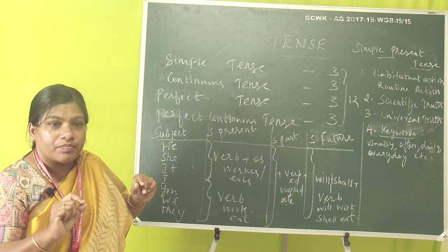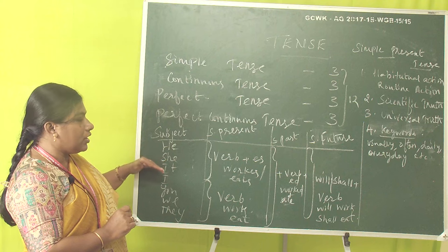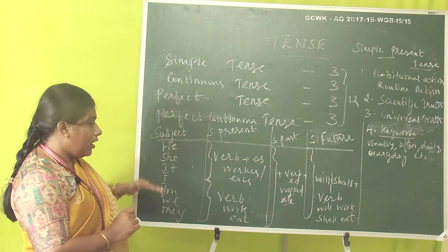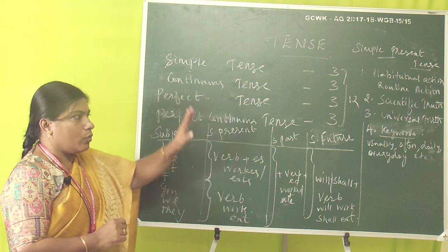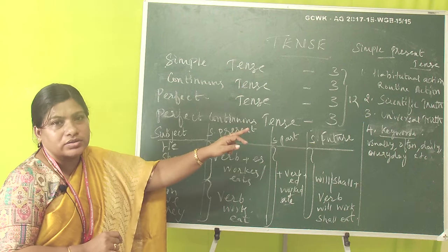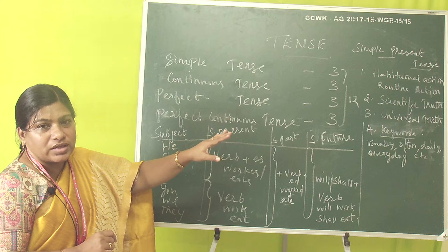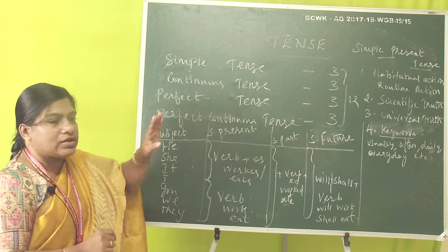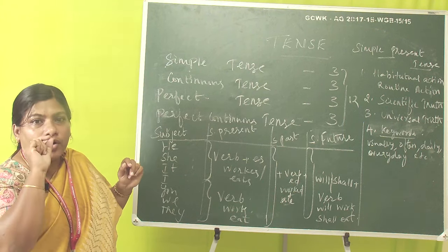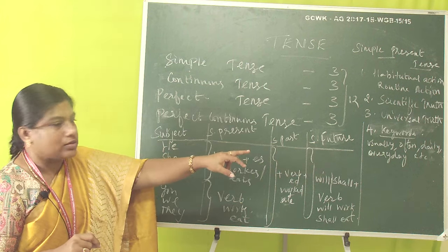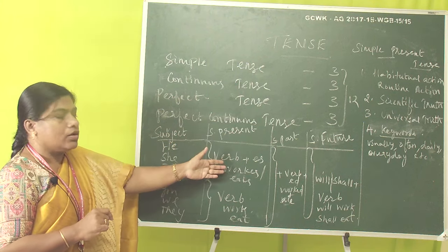Once you identify the tense type, you also need to look at the subject. When he, she, it comes, we go on with 'es'. For I, you, we, they, we use the base verb. See the sentence first, identify whether it is denoting habitual, scientific, or universal facts, then look at the keyword — every sentence will have a keyword indicating whether the event is happening today, yesterday, or tomorrow.